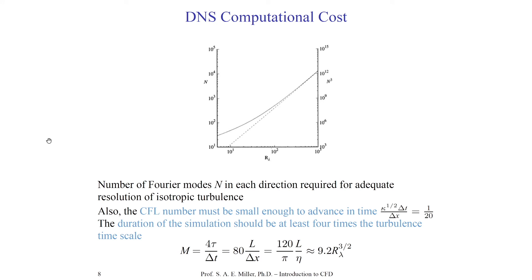How do the number of Fourier modes in each direction increase with adequate resolution for an isotropic homogeneous case? This is illustrated in the figure. The x-axis is the logarithm of the Taylor-Reynolds number from 10 to 1000. On the y-axes we have N and N-cubed — the number of modes. At a Taylor-Reynolds number of 1000, we have about 10¹² modes in the computational domain — an incredible number of modes to be resolved, and extremely computationally expensive.